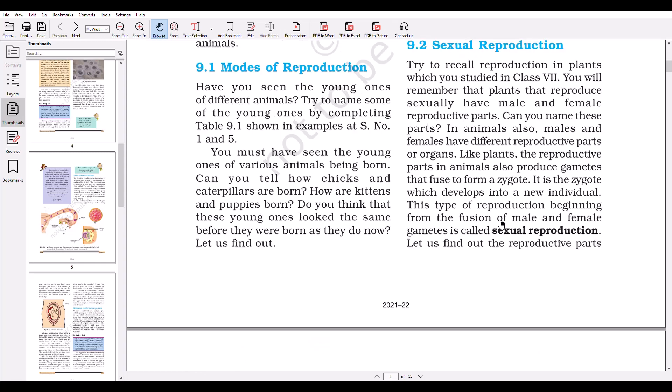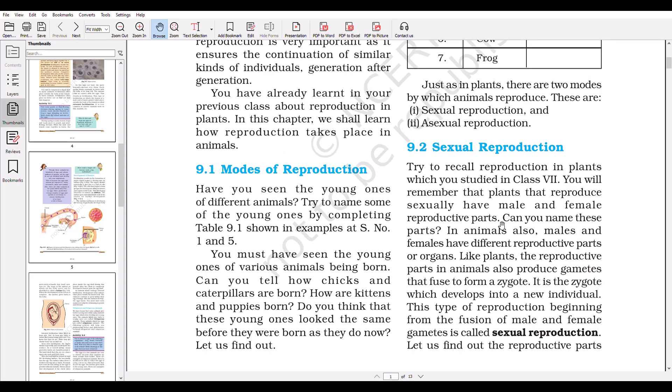Now we will learn more about sexual reproduction. Like plants, the reproductive parts in animals also produce gametes that fuse to form a zygote. It is the zygote which develops into a new individual. This type of reproduction beginning from the fusion of male and female gametes is called sexual reproduction.